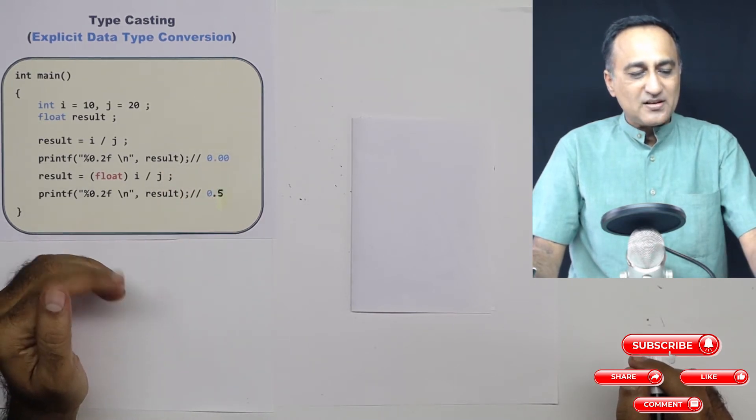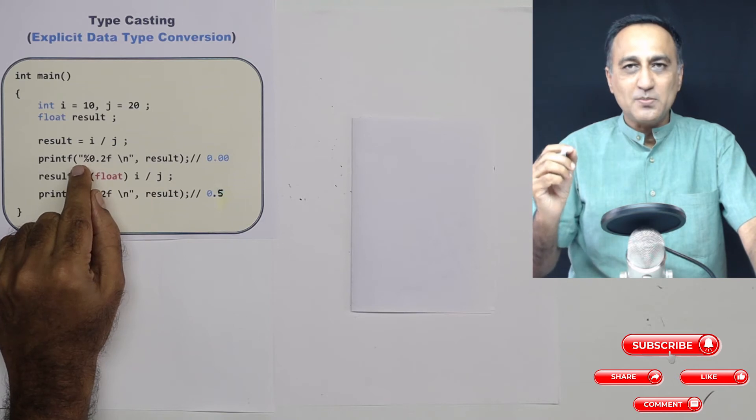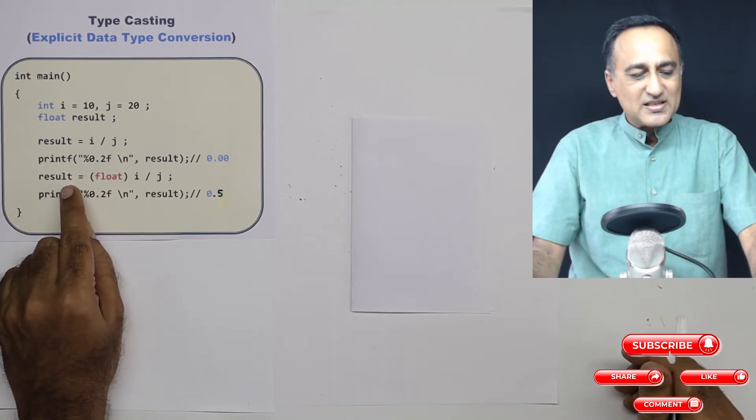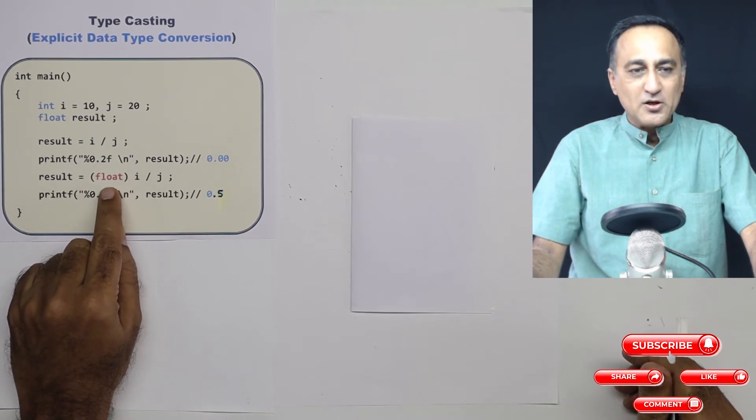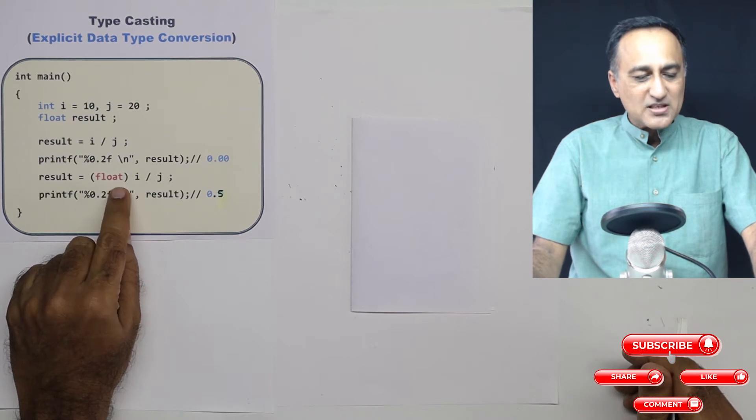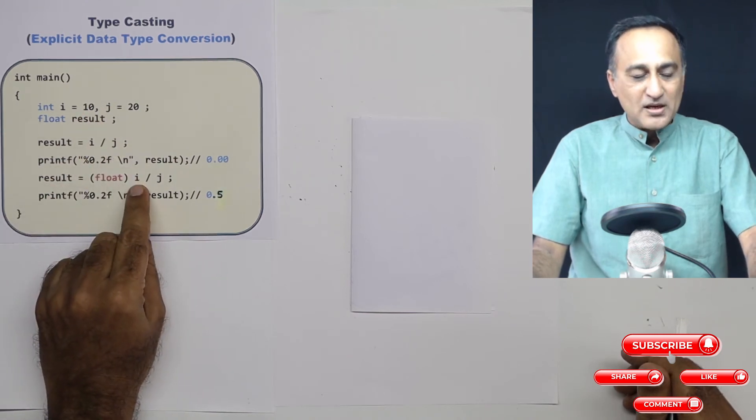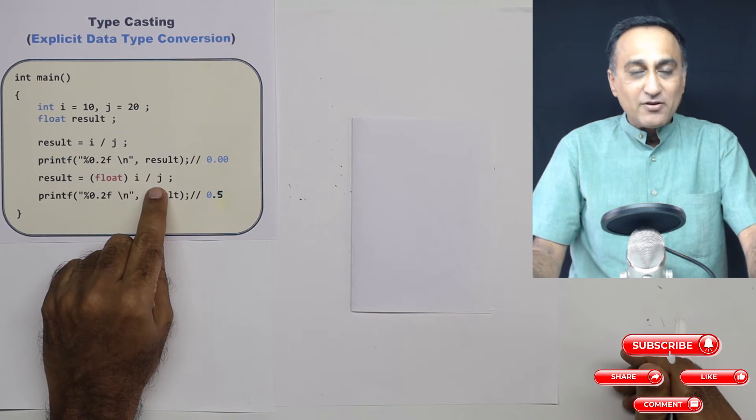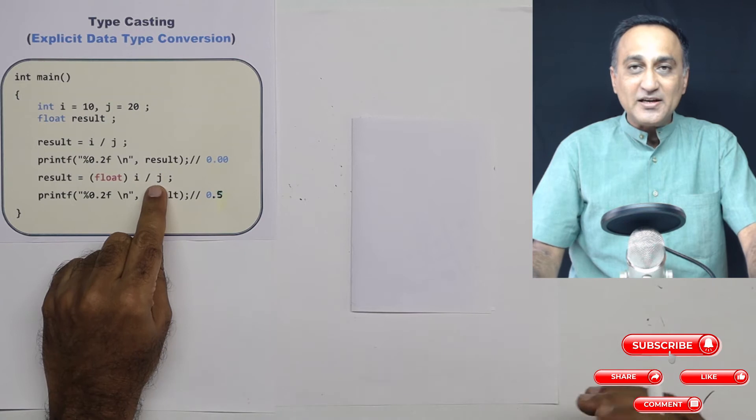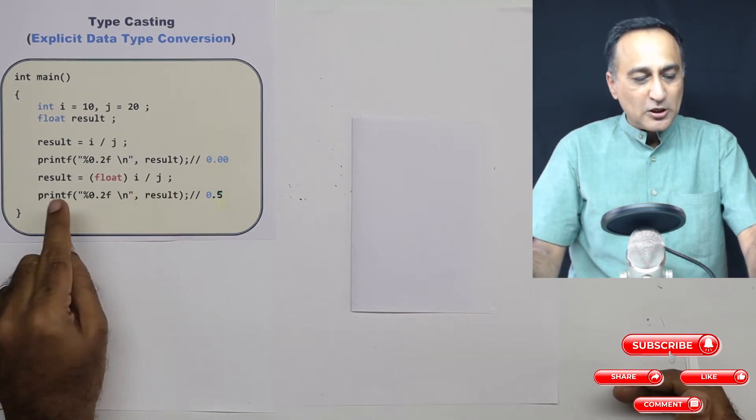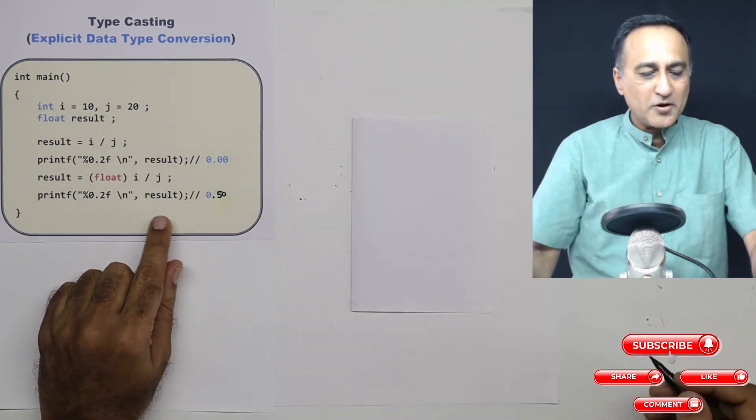Now suppose you decide that is not what you wanted, you wanted the result to be in form of a real number or a floating point number. Then what you can do is you can say result is forcibly typecast i to float. By using this typecasting in bracket called as float, i now is converted to 10.00. Because one number is in float, c will implicitly convert j also into float. Now if you divide it and print to two decimal places, it's going to print 0.50.